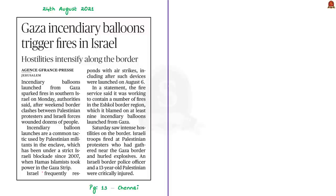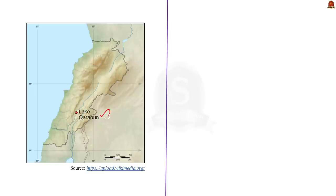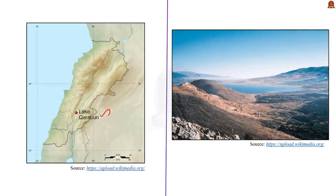The next question appeared in The Hindu on 24th August. It gives four water bodies and asks us to arrange them from south to north: Lake Quaroun, Gulf of Aqaba, Sea of Galilee, and Dead Sea. Since the Middle East is always in the news, you must have the map of this region at your fingertips. First, Lake Quaroun is an artificial lake in Lebanon, built across the river Litani, which is the longest river in Lebanon.